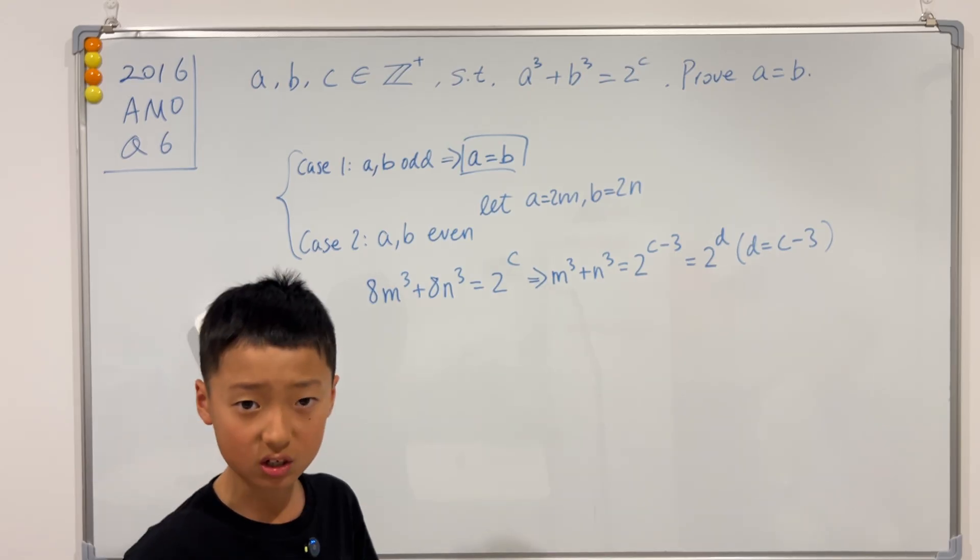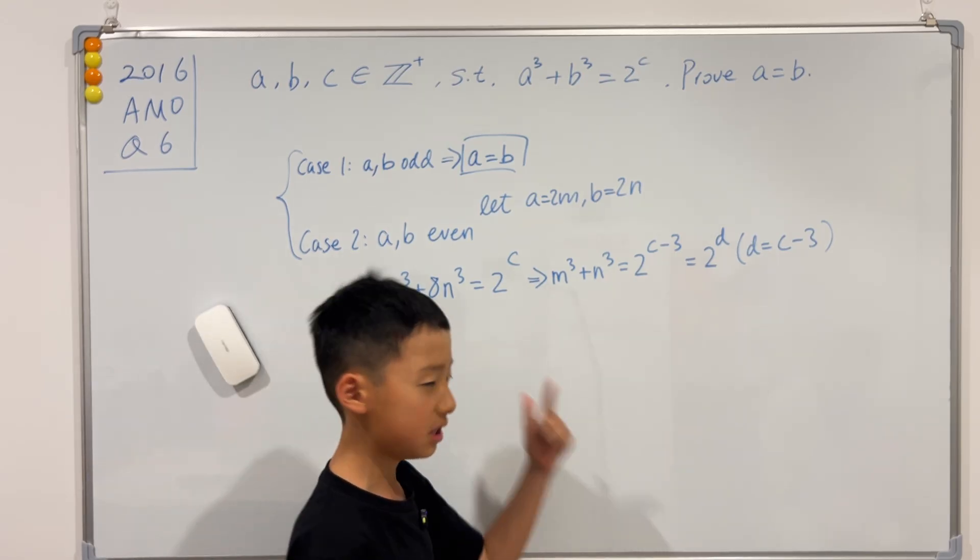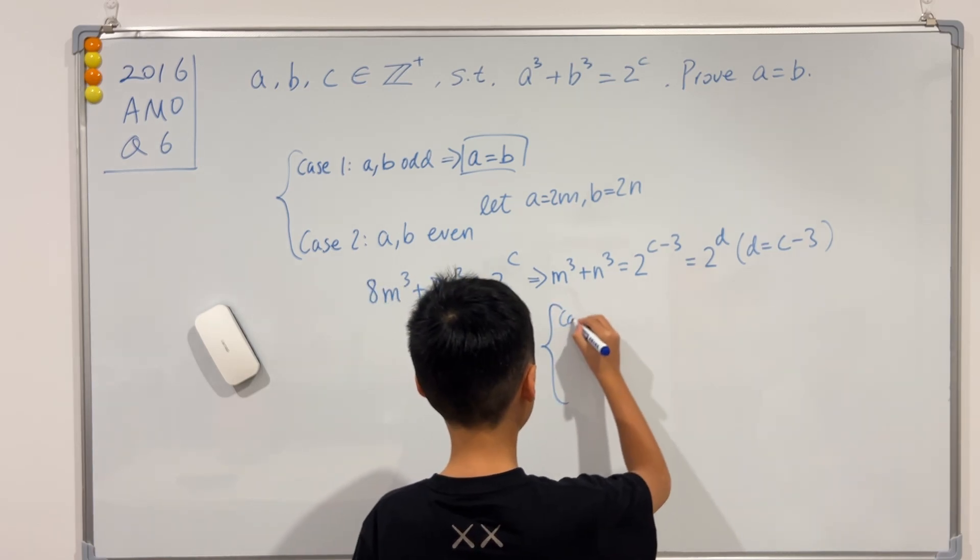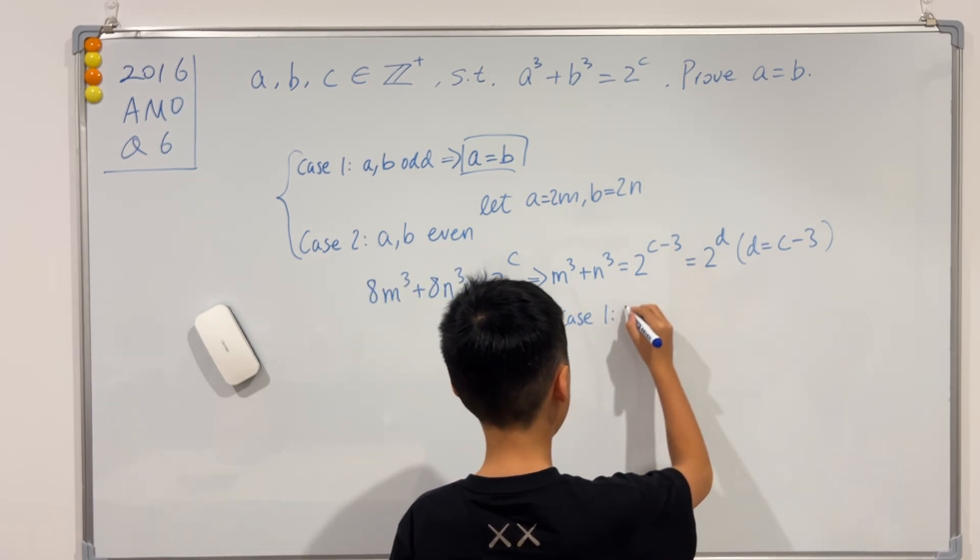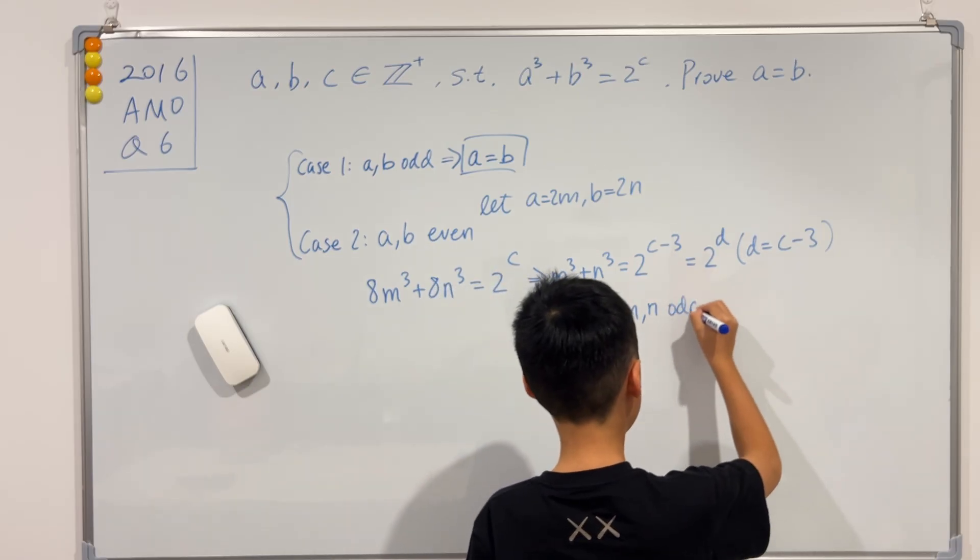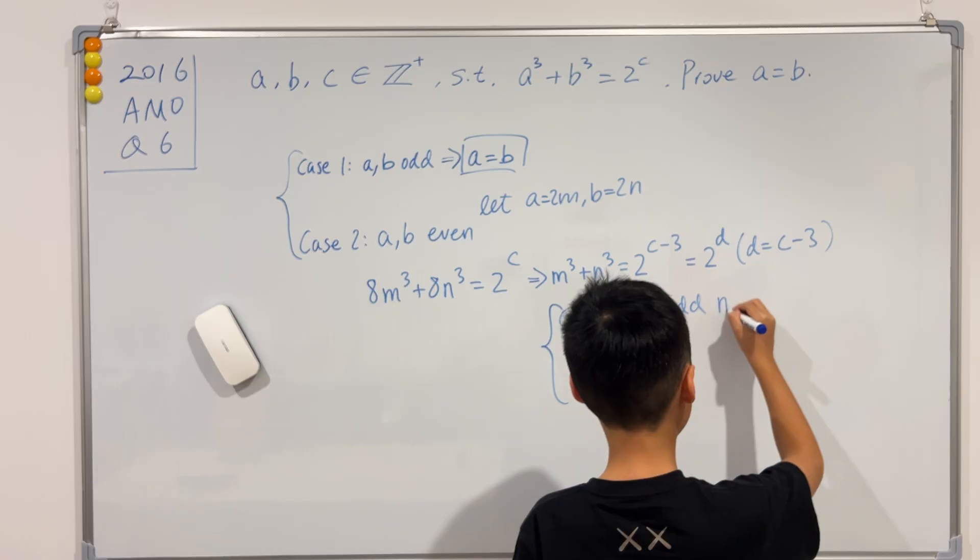And now look, we're back to the original equation. So don't we need to split this into cases as well? The first case is when m and n are odd. And in this case, we know that m equals n.